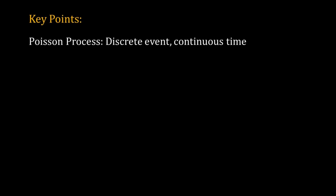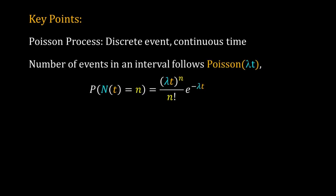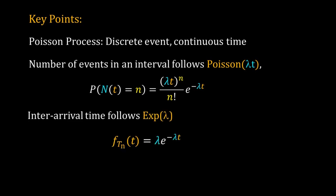Here are the key points. A Poisson process is a stochastic process with discrete events happening in continuous time. In a Poisson process, the probability of having n events in an interval t follows the Poisson distribution with mean equal to lambda into t. The inter-arrival time, that is the time between two events in a Poisson process, follows exponential distribution with parameter equal to the rate of the Poisson process. Finally, the waiting time to observe the nth event in a Poisson process follows the gamma distribution, with n and lambda as the parameters.